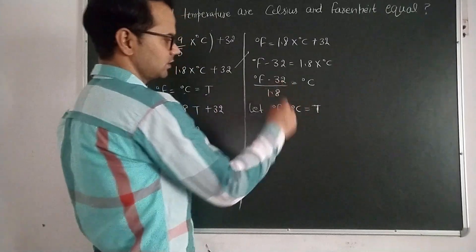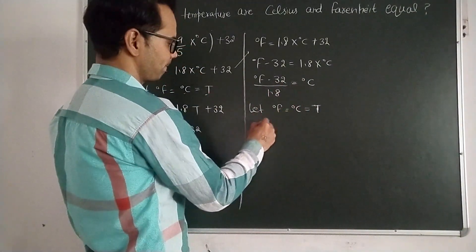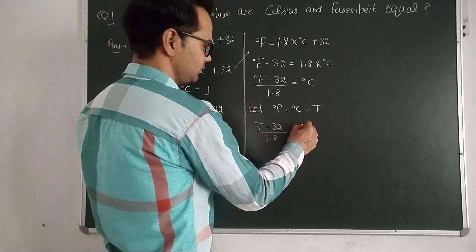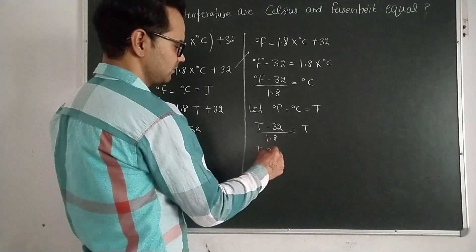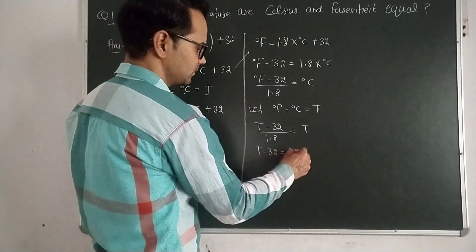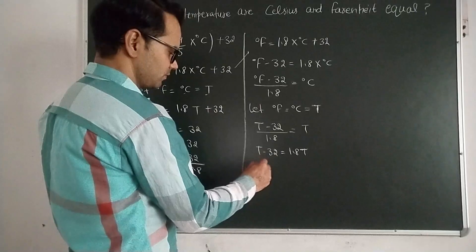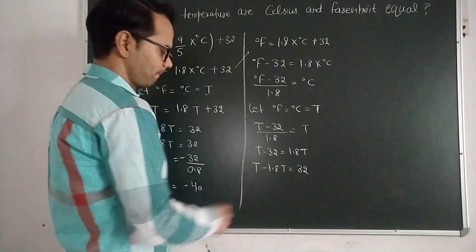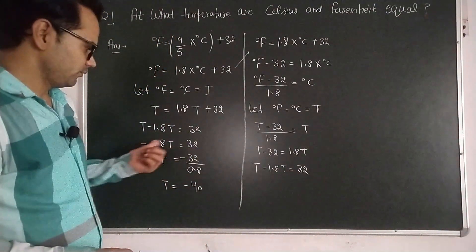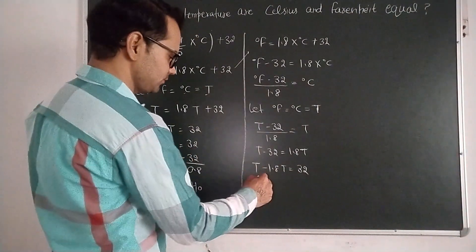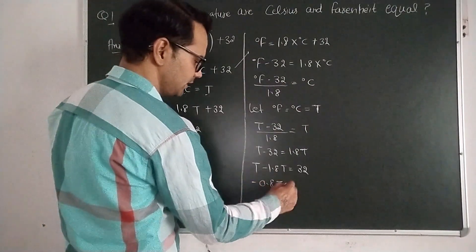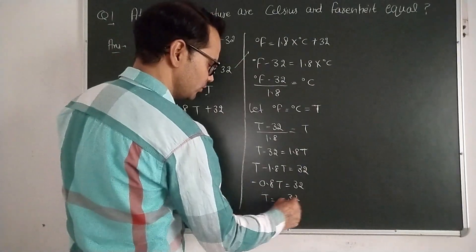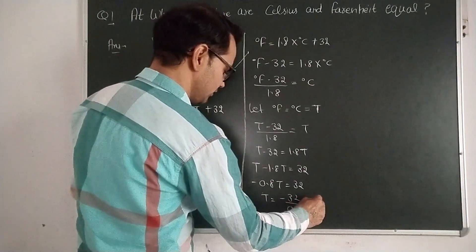Substituting into the rearranged formula: (t − 32) ÷ 1.8 = t. Solving: t − 32 = 1.8t, so t − 1.8t = 32, giving −0.8t = 32. Therefore t = −32 ÷ 0.8, and again the value is −40. We can use both equations to find the temperature and the answer is the same.